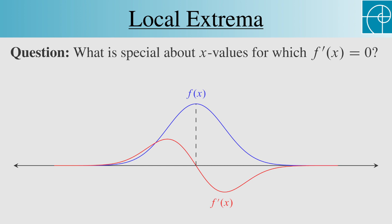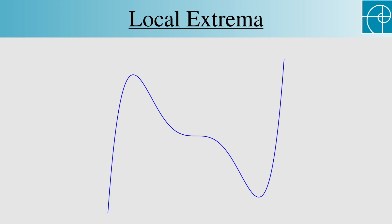Let's look now at this graph. There are three places where the derivative of the function is 0. In other words, three places where it has horizontal tangent lines.